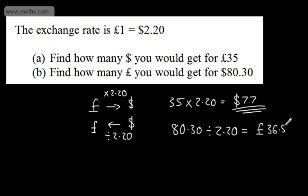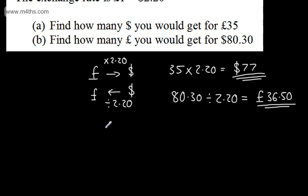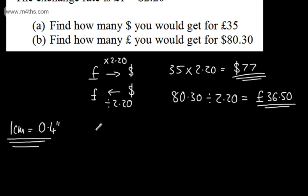So we're working between the two. If I want to go from pounds to dollars, multiply by 2.2. If I want to go back, divide by 2.2. Let's look at another conversion — centimetres to inches. One centimetre is approximately 0.4 inches. So if I wanted to go from centimetres to inches, I would multiply by 0.4. If I wanted to go from inches to centimetres, I would divide by 0.4.